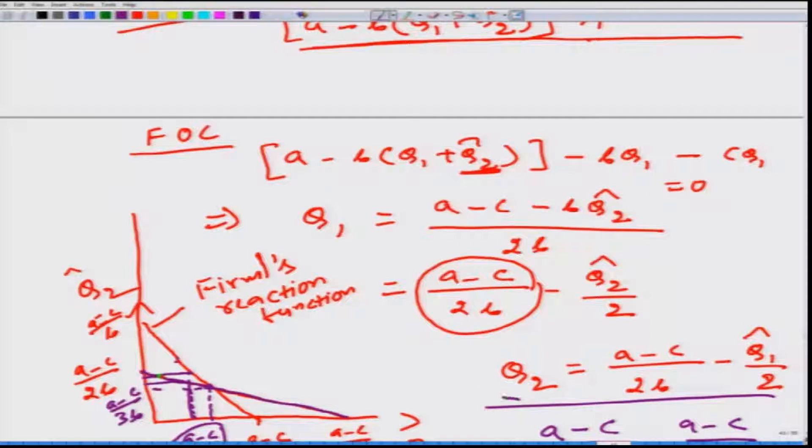What we have done in the Cournot setting is firm two thinks that firm one is going to produce Q1 and this formula gives the optimal level of production for firm two.